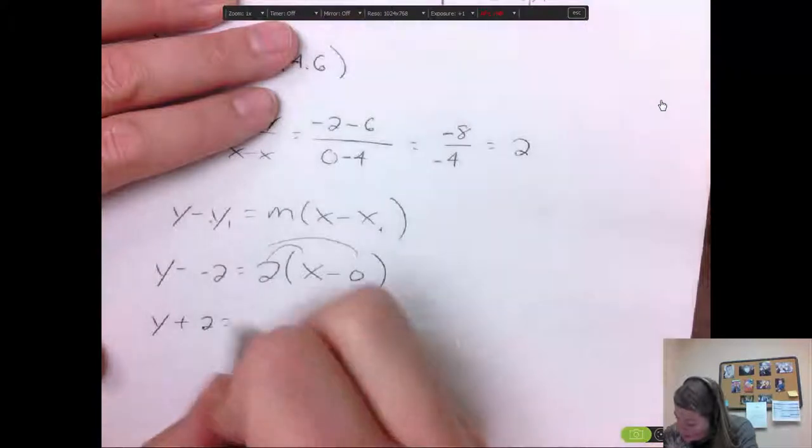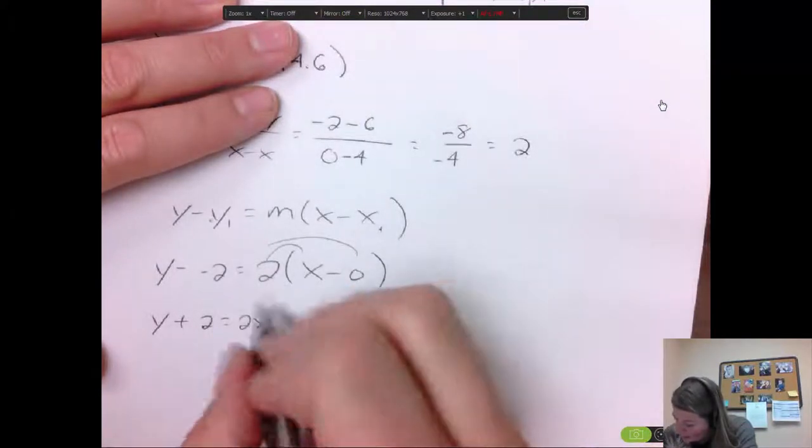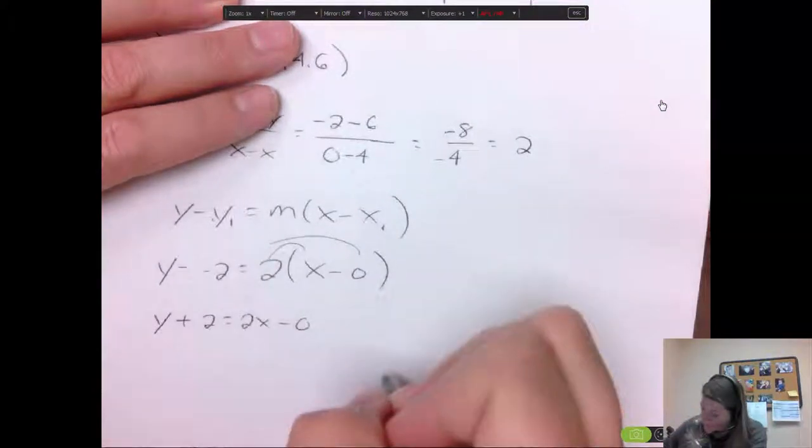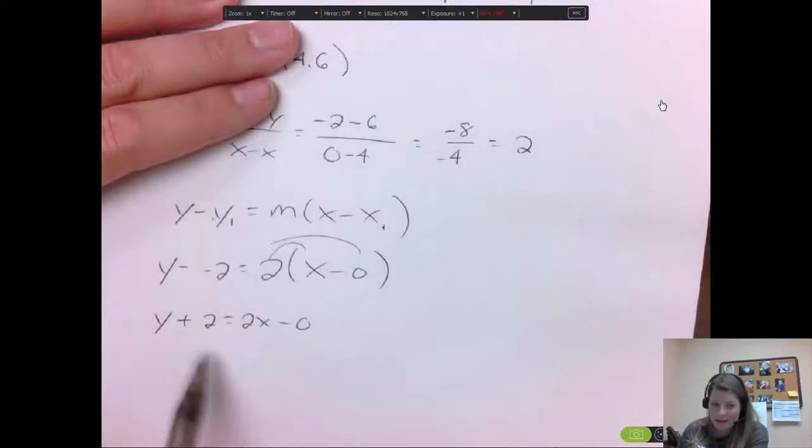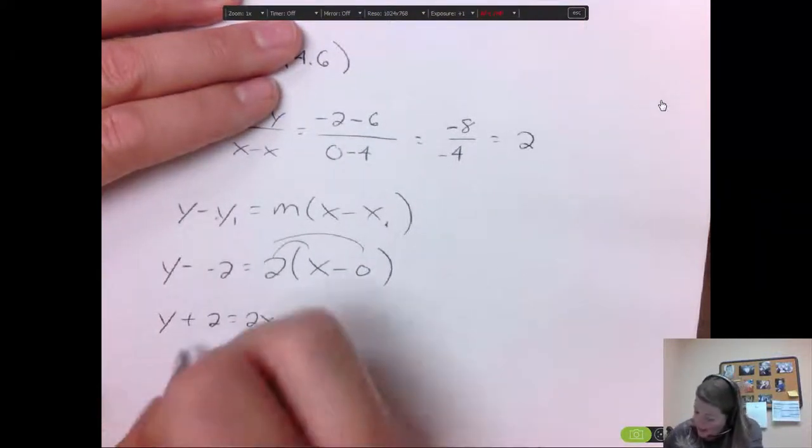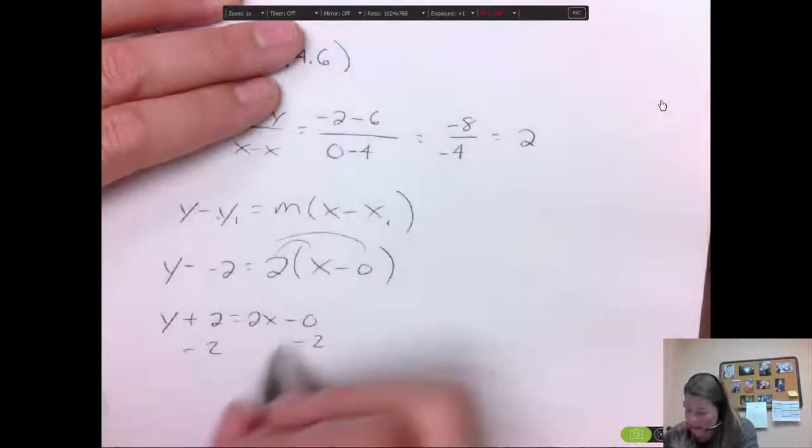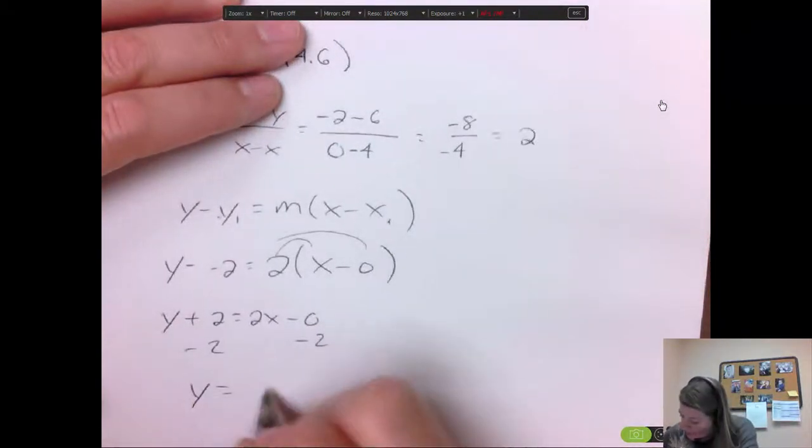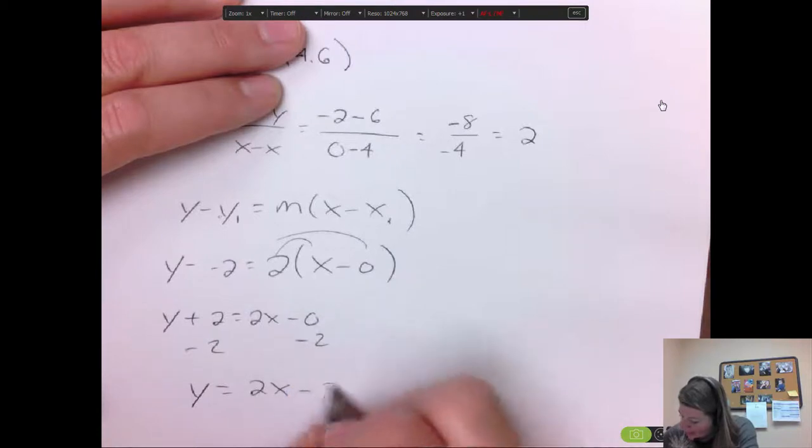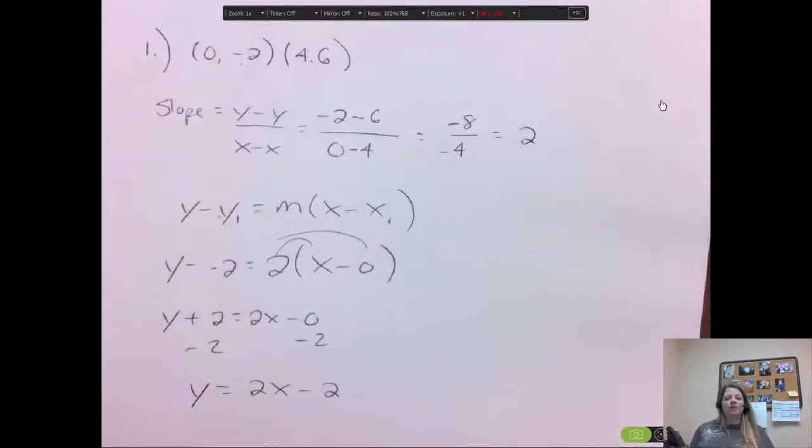So 2 times x is 2x. 2 times 0 is 0. And then I can minus the 2 over, and I would minus it over to the number, not the x, because you can't add a 2 and an x. And you get y equals 2x. -0 minus 2 is -2. And you're done.